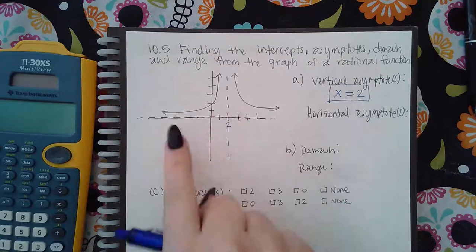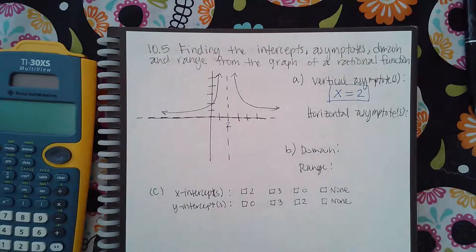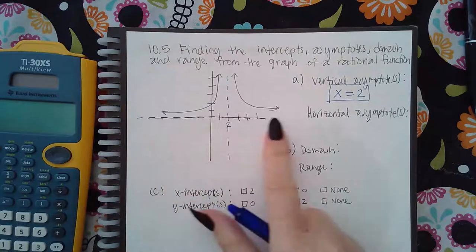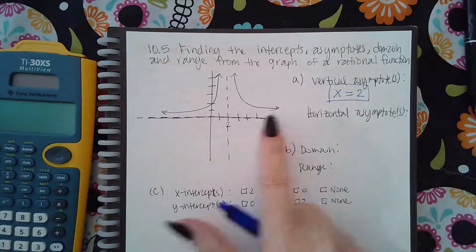Now I see that I have a horizontal asymptote right on top of the x-axis. What is the equation? I'm sorry, right on top of the x-axis.